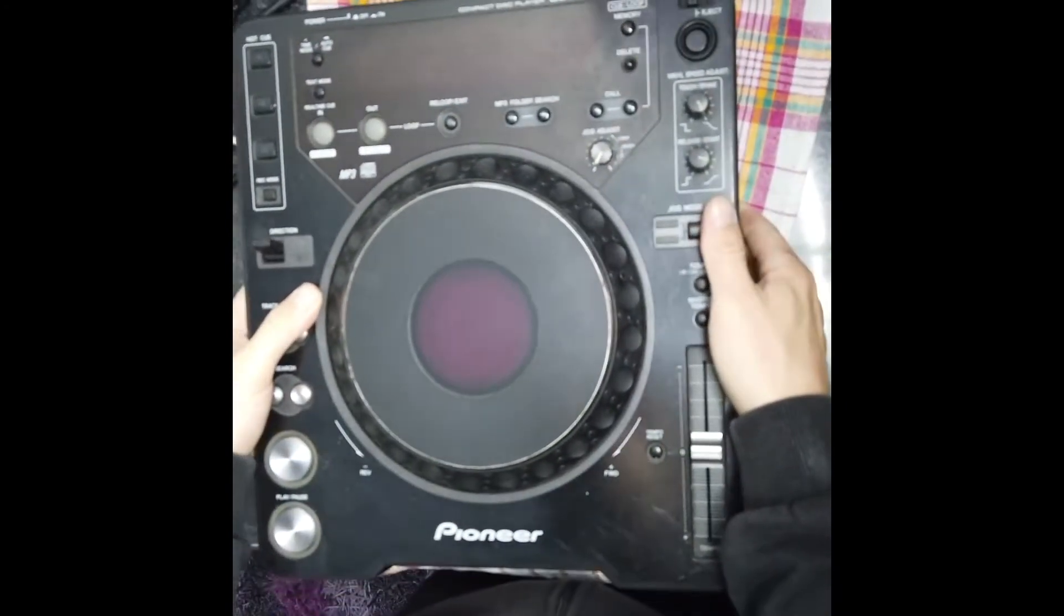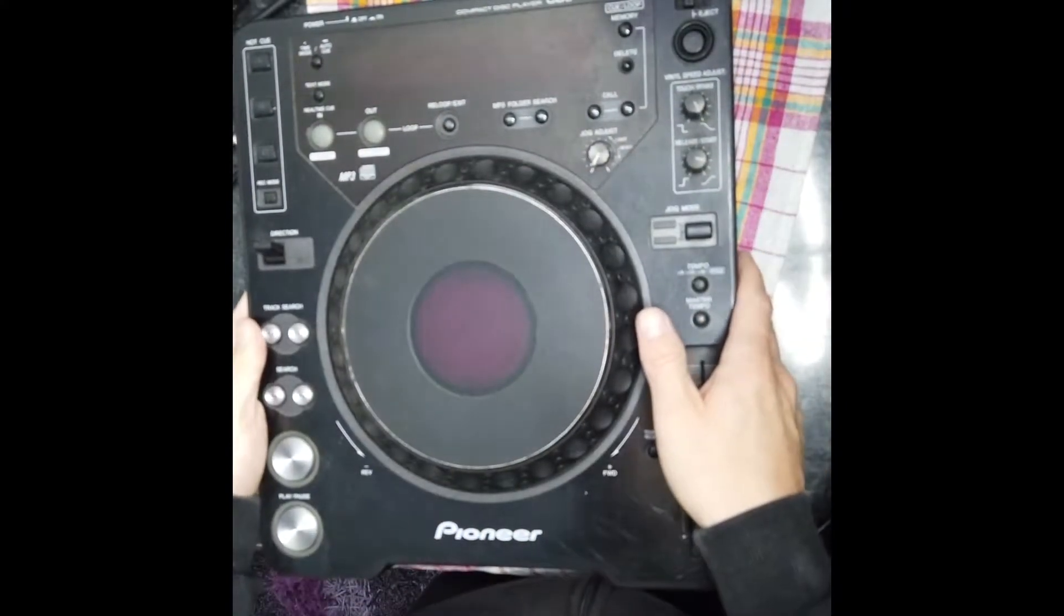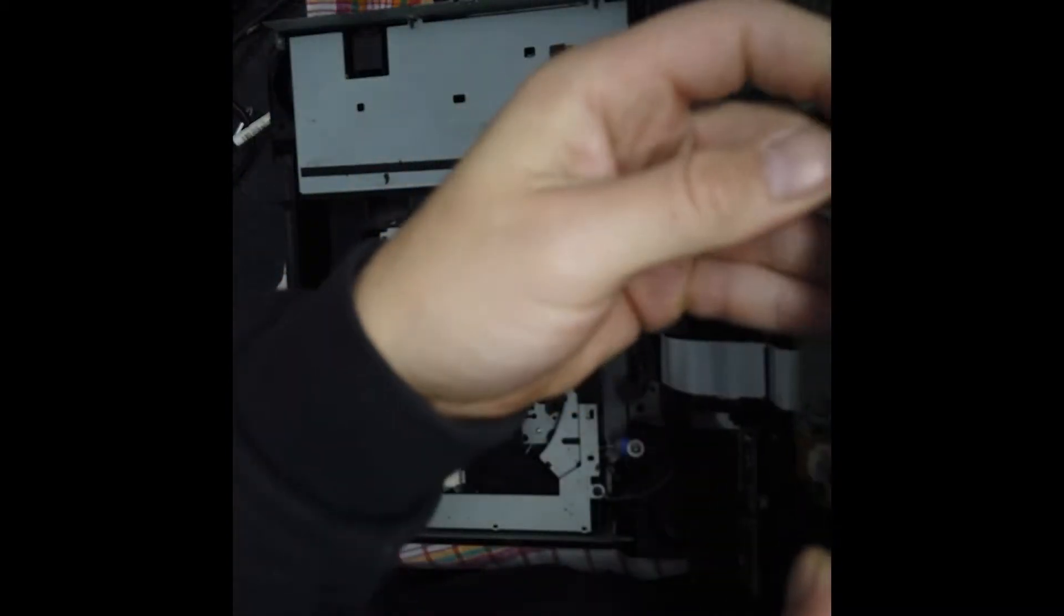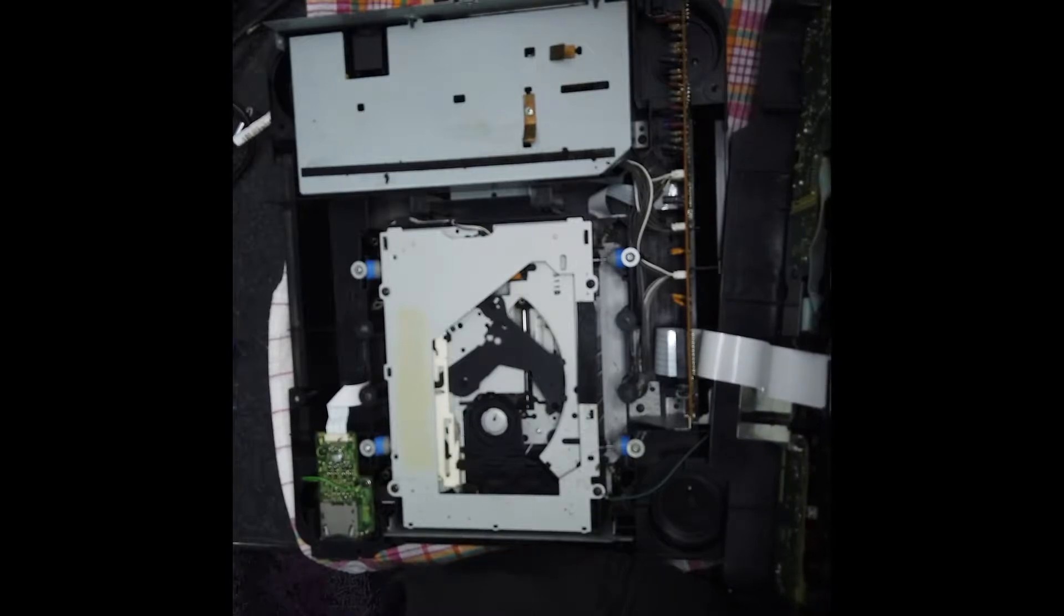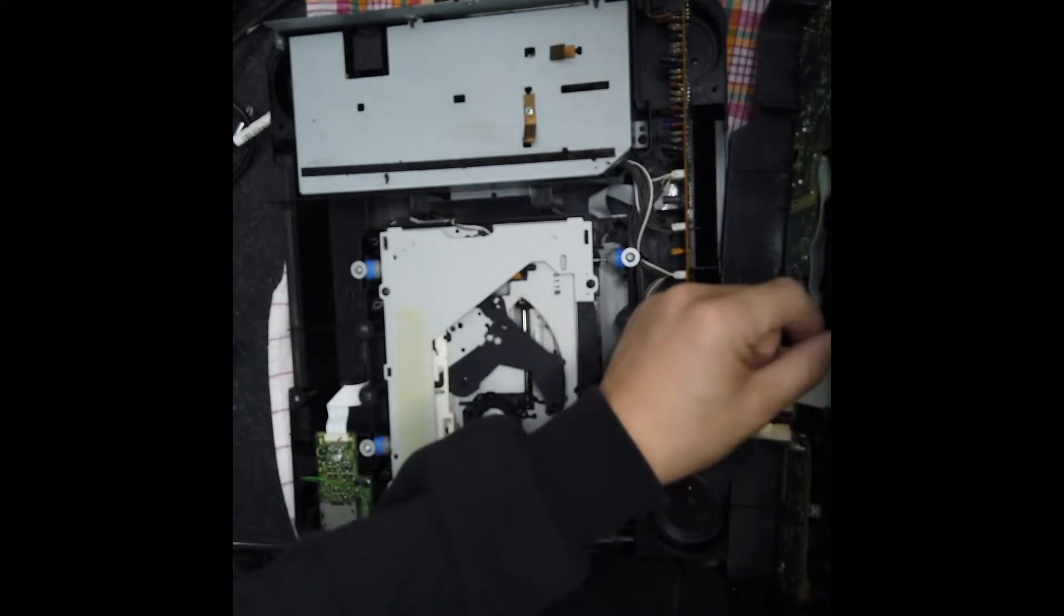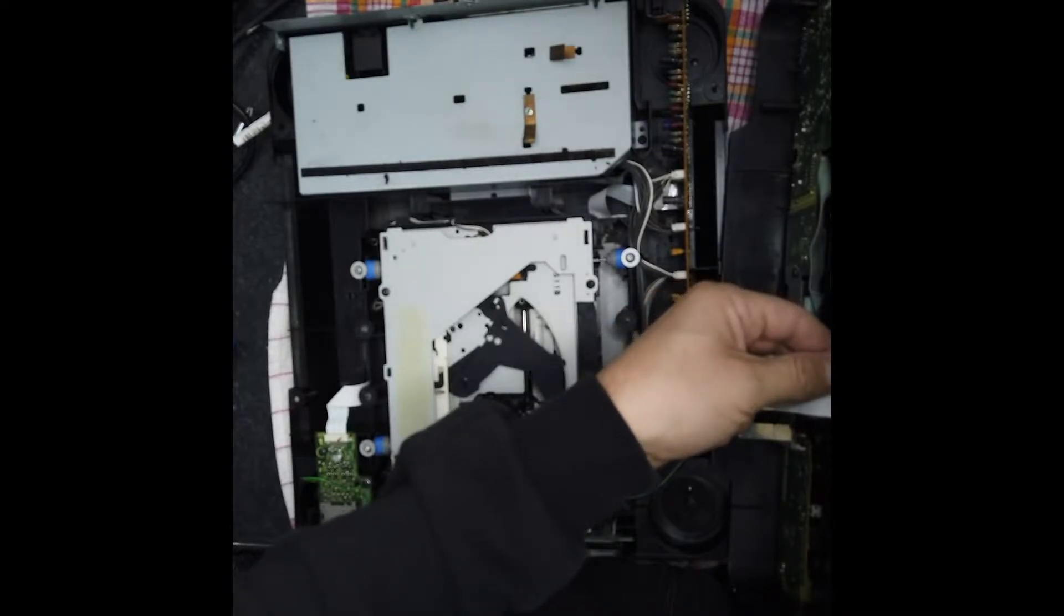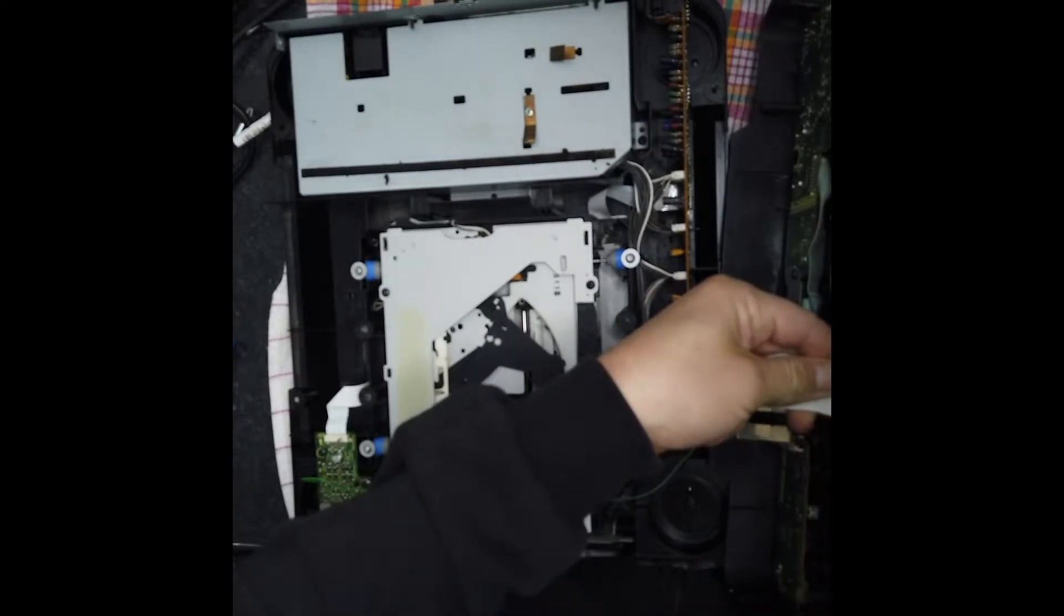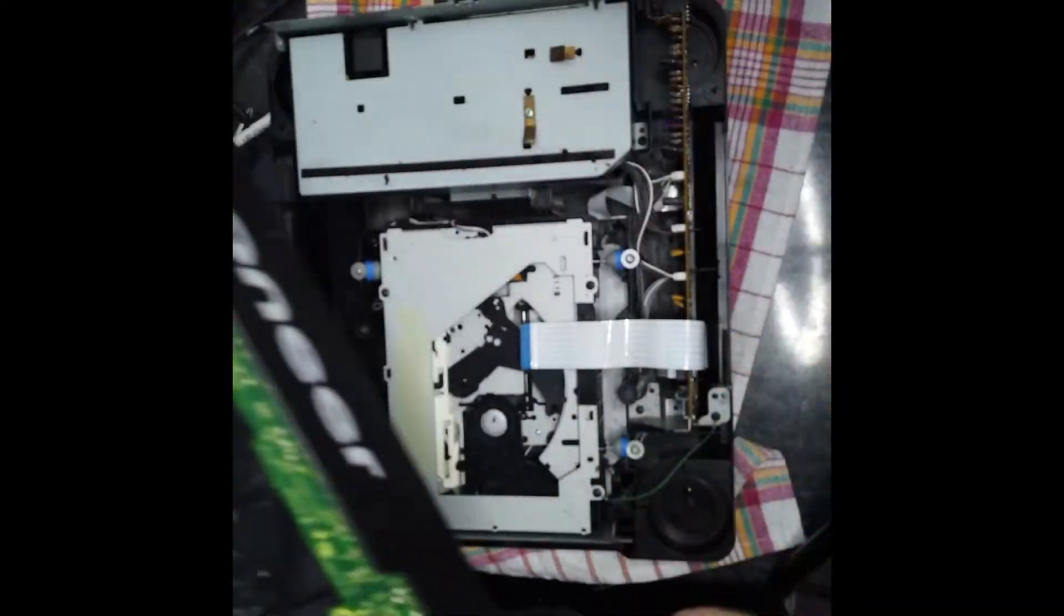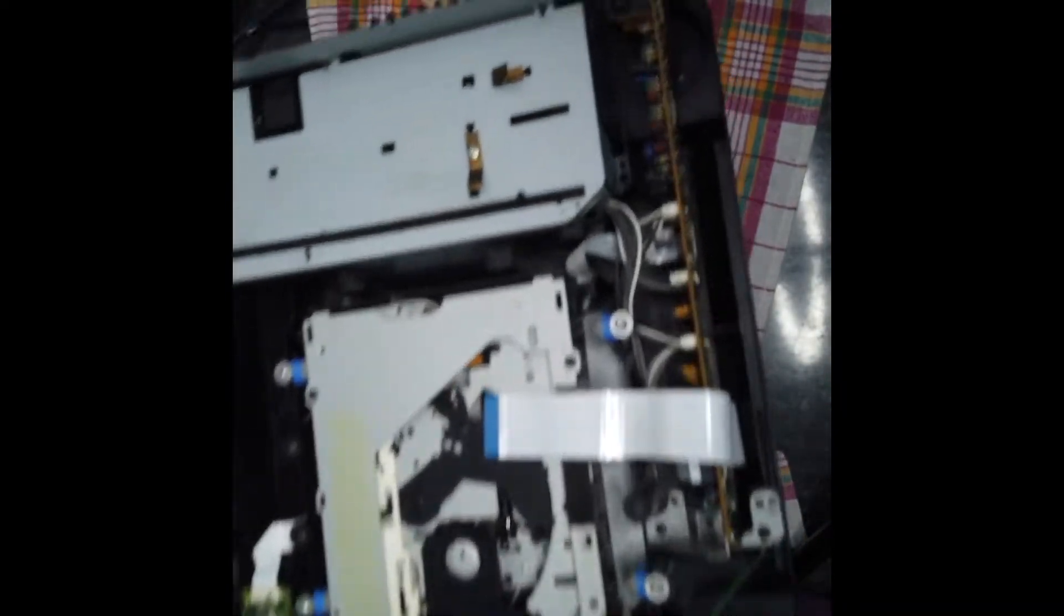Turn it back around, open to the right side like that. As you can see here there is a clip, lift up like that, slowly remove the flex cable. There you go, take this, put it somewhere else.